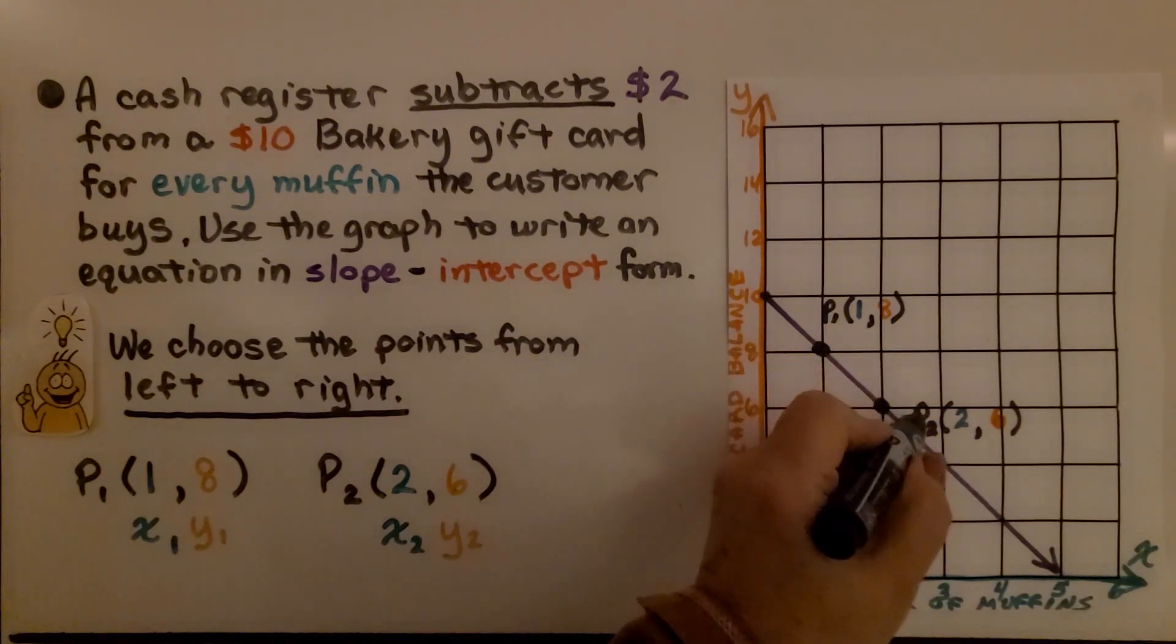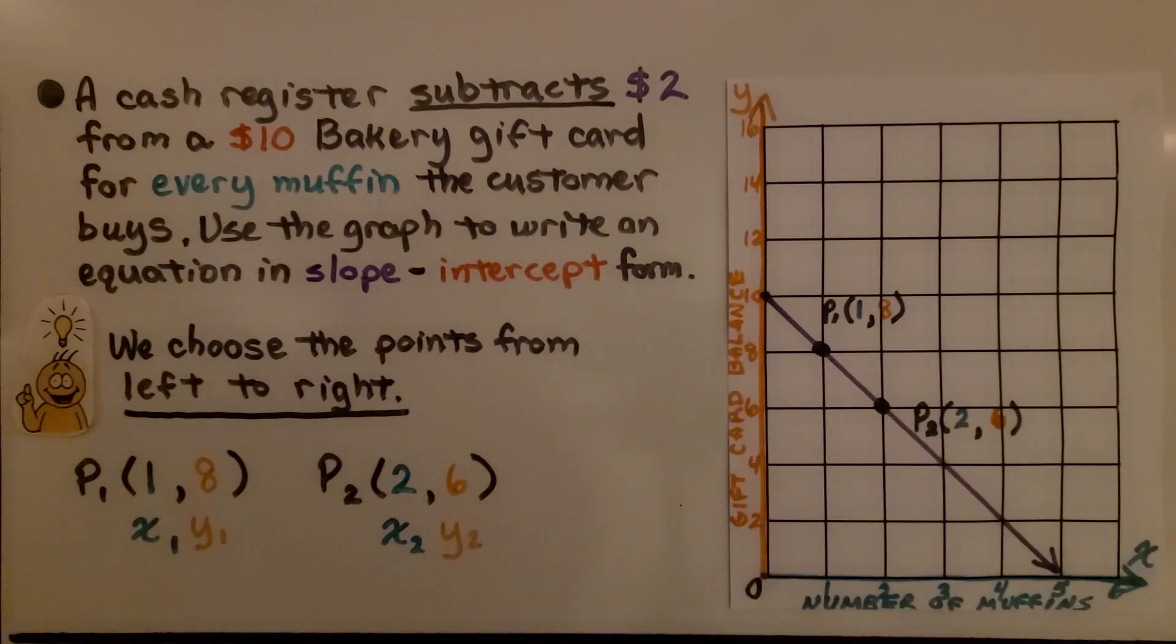This will be point 1, and this will be point 2. We go from left to right. So that's point 1, that's point 2. We're going to have 1 for the first x, and 8 for the first y, and 2 for the second x, and 6 for the second y.